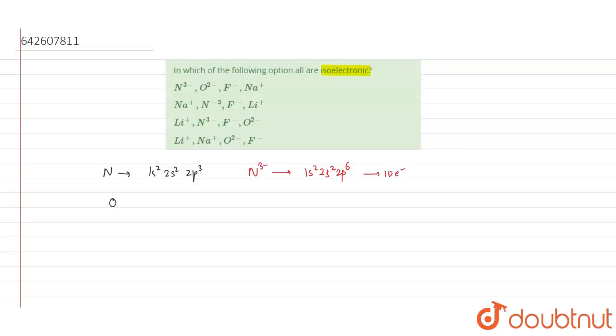For oxygen, the electronic configuration is 1s² 2s² 2p⁴. Okay, so for O²⁻, two electrons will add.